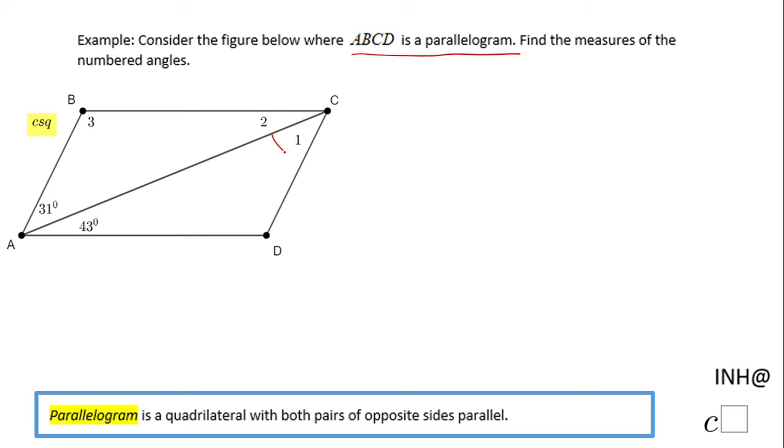If you take a look, this is angle 1 and this angle 1 is congruent to this angle that is 31 degrees. Why?